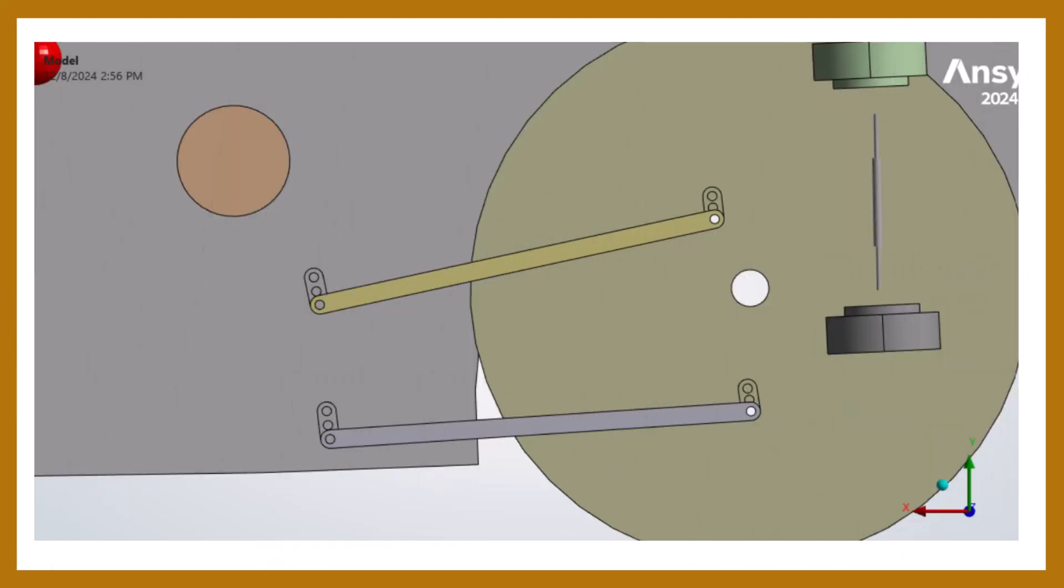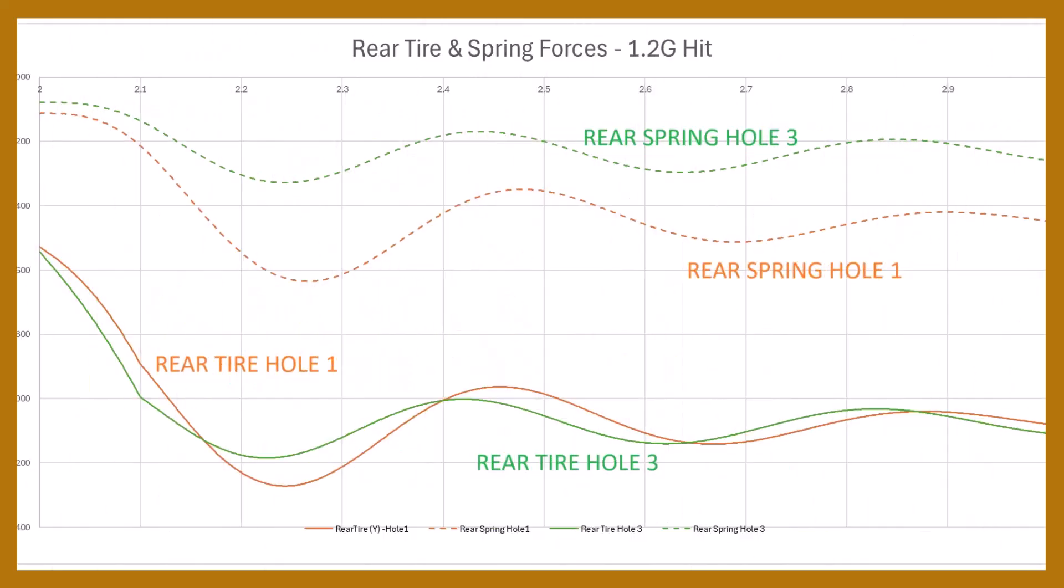We made 2 separate runs, only changing the lower bar position. Hole 3 would result in a higher squat percentage. Here's a plot comparing the two hole positions 1 and 3. Notice that upon the initial hit, the tire is driven harder to the ground with hole 3 as expected. Also note that the higher spring forces with hole 1 produce a higher tire force reaction resulting from the squat.